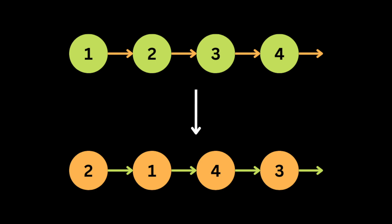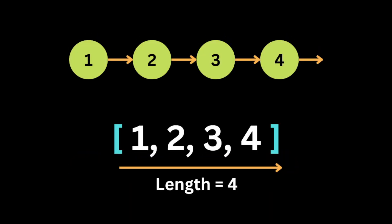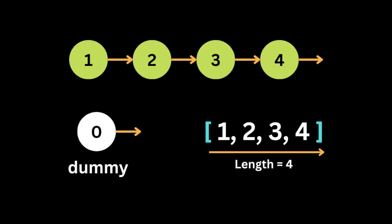This is a good problem to learn how linked lists work. The best way to solve it is with an iterative approach. Given the input linked list, the first thing I'll do is make an empty array and store all the node values in it. Then we calculate the length of the array — knowing how many nodes we have helps us determine how many times the swap will be performed.